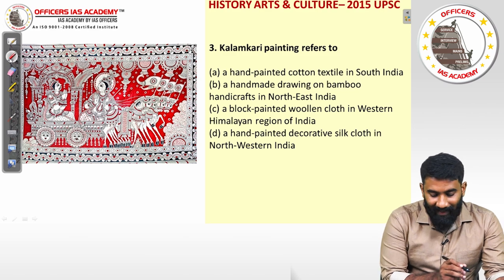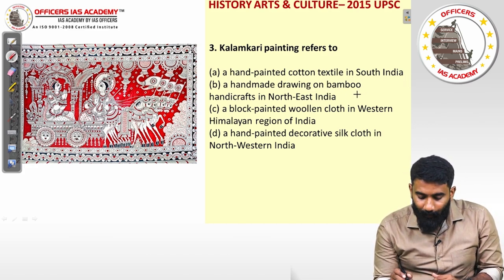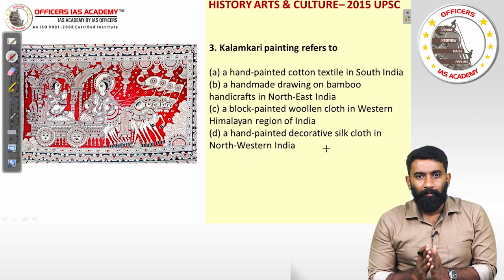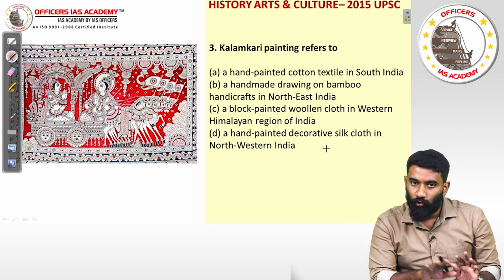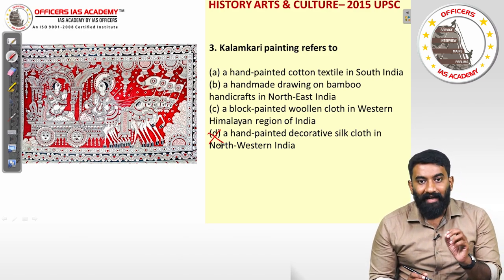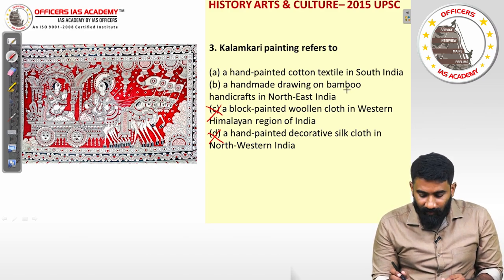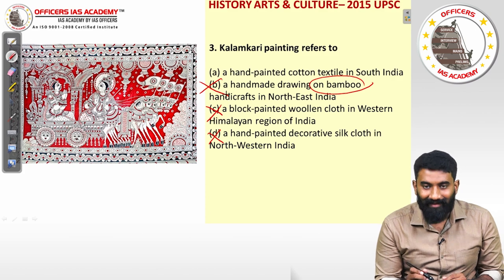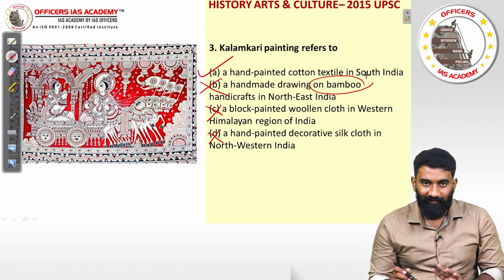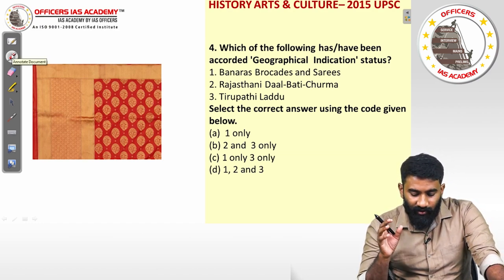Question three: Kalamkari painting refers to which of the following? The options describe hand-painted cloth in south India, handmade drawing on bamboo in northeastern India, block-painted woolen cloth in the western Himalayas, and hand-painted decorative silk cloth in northwestern India. Kalamkari is made on cotton cloth, so option D is eliminated. It is hand-painted, so block printing eliminates C. It is not made on bamboo, so B is also wrong. The answer is option A — hand-painted cloth textile in south India, primarily in Andhra Pradesh.